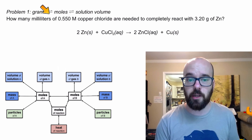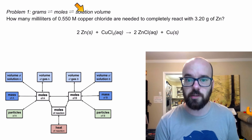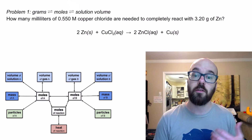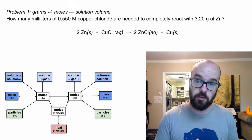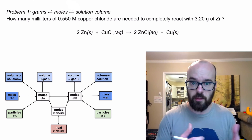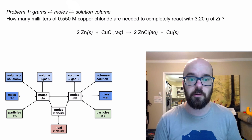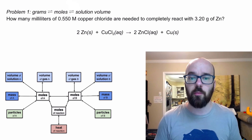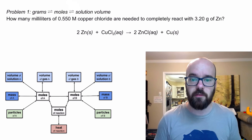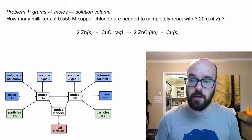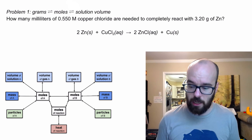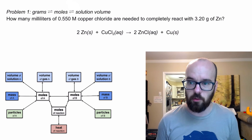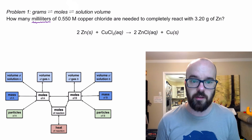This first problem is going to include a grams-to-moles conversion as well as a moles-to-volume-of-solution problem — kind of the solution stoichiometry. How many milliliters of 0.550 molar copper chloride are needed to completely react with 3.2 grams of zinc?